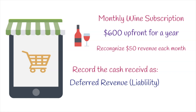When your wine company receives $600 up front, it's recorded as deferred revenue, which is a liability on the balance sheet, against the cash received in the bank. It's a liability because if the customer cancels mid-year, the company would owe them back $300 depending on the agreement. As the company delivers wine monthly, it reduces that liability in $50 increments, recognizing revenue over time.